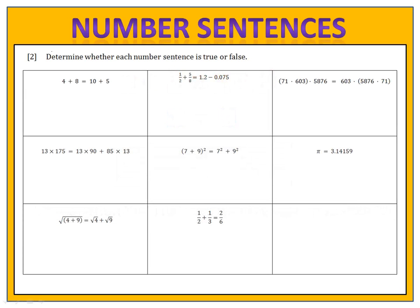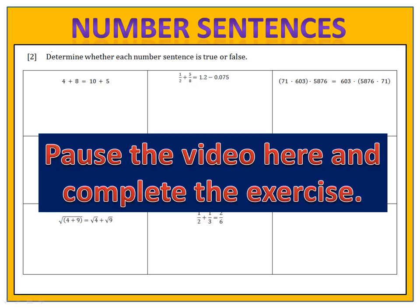Exercise 2 is all about determining whether number sentences are true or false. Look on each side of the equality and calculate its value. If both sides are equal, then we have a true number sentence; if they're not, it's false. Please pause the video here and complete the exercise.